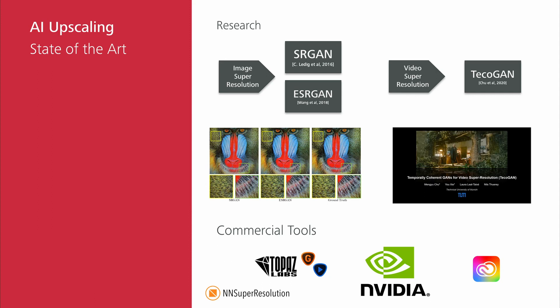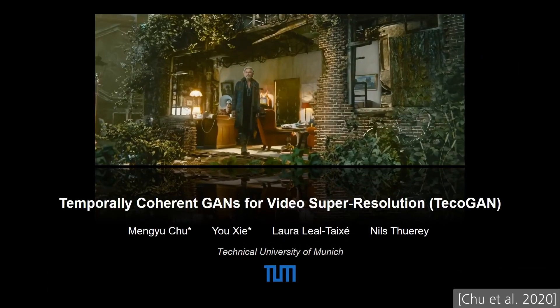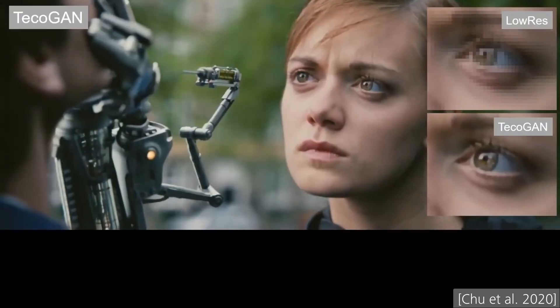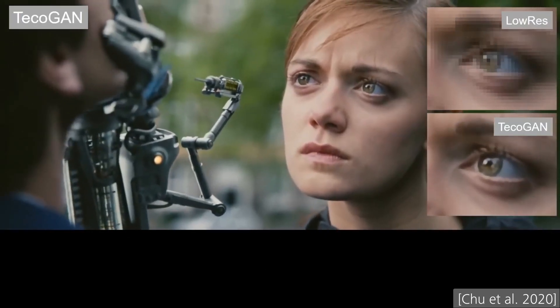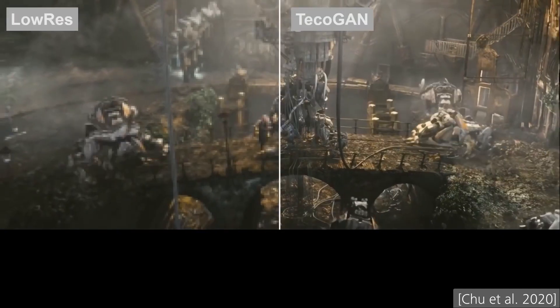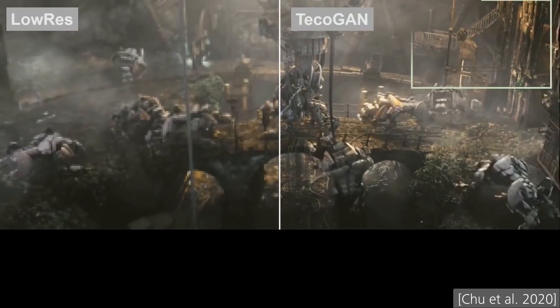There are various approaches to fix this problem and achieve similar quality results for the video super-resolution task. One of the most prominent ones is TecoGAN, based on the paper "Learning Temporal Coherence via Self-Supervision for GAN-based Video Generation" by Chu et al. from the Technical University of Munich. They apply a sophisticated recurrent GAN architecture with a complex loss term to achieve a high scaling factor of 4 with high quality results and temporal coherence. You can see how TecoGAN is able to reconstruct fine details in an actor's face like eyes, as well as reconstruct the railing of stairs in the background based on just a few blurry pixels.